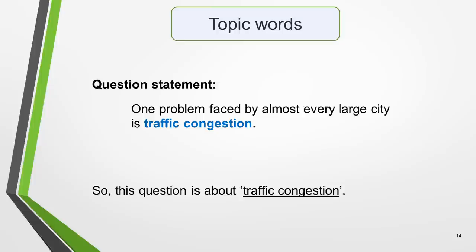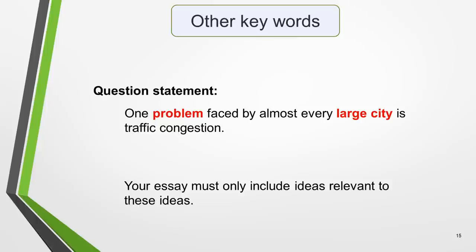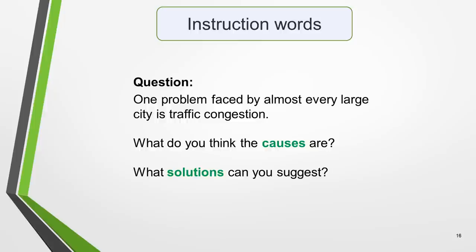So this question is about traffic congestion. Many people will do this first step of the process and then write about the topic in general — this is a serious mistake and leads to low marks for task achievement. What we need to do now is understand exactly what aspect of traffic congestion we're being asked to write about. The other keywords in the question tell you the specific topic you must write about. By highlighting these words it's easy to see that you're being asked to write about the problem of traffic congestion in large cities. Your essay must only include ideas relevant to these ideas. The instruction words are the question itself — these tell you the type of problem-solution essay you must write. This is a causes and solutions question.